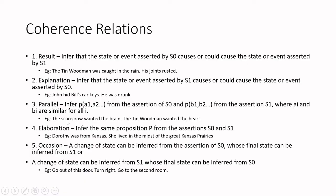Next is the parallel relationship. For example: 'The scarecrow wanted the brain. The tin woodman wanted the heart.' There is a parallel between these two sentences — scarecrow parallels tin woodman, and wanted the brain parallels wanted the heart. Formally, you infer a proposition P(A1, A2, ...) from assertion S0 and P(B1, B2, ...) from assertion S1, where Ai and Bi are similar for all i. The parameters within the sentences are similar — scarecrow and tin woodman, brain and heart.